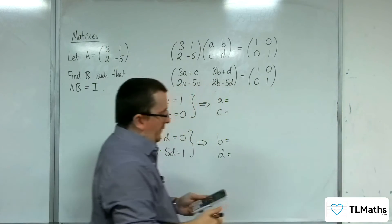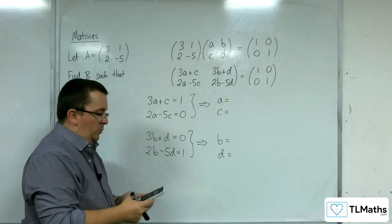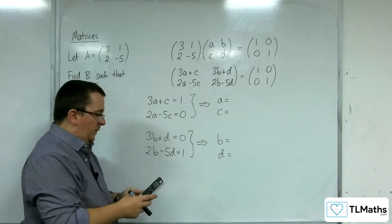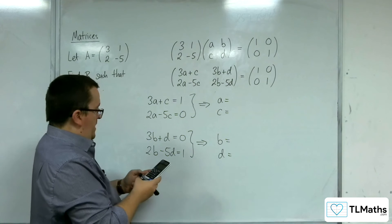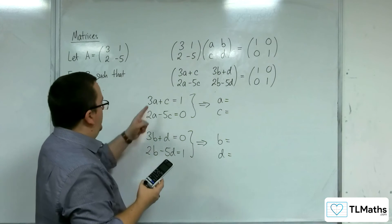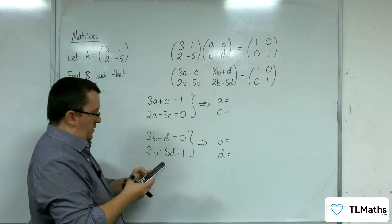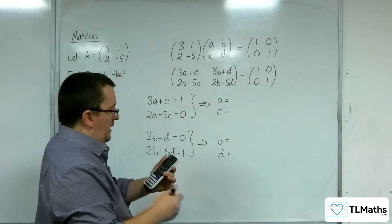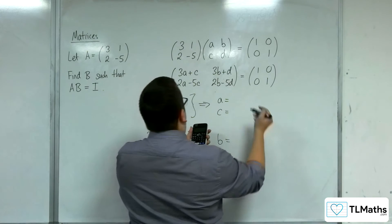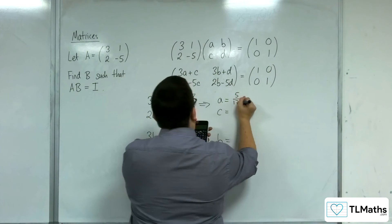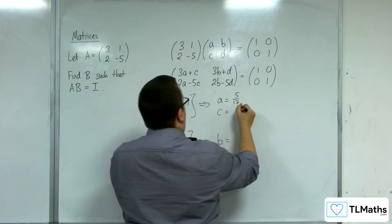So I'm going to go to the Casio class whiz and go to the simultaneous equation solver. So 3, 1, 1 - reading off the coefficients, 3, 1, 1, and then 2, negative 5, 0. And we get 5 17ths. That's A. And C is 2 17ths.